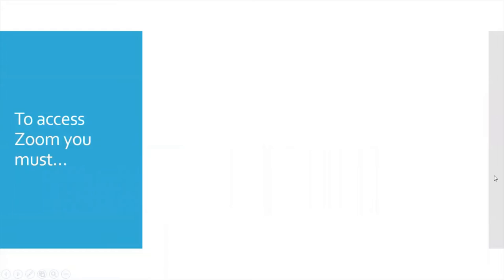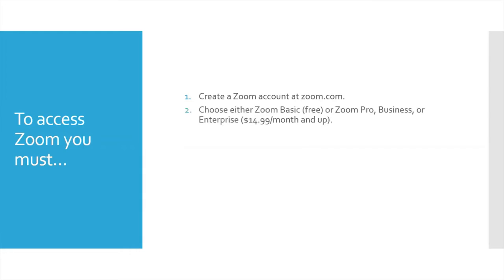To access Zoom, the first thing you have to do is create a Zoom account at zoom.com. It's very simple, very quick, only takes a couple of minutes. At that point, you'll choose either Zoom Basic, which is free, or one of the paid memberships — Zoom Pro, Zoom Business, or Zoom Enterprise — which start at $14.99 a month and go up with each level. The free basic version is very versatile and will have most likely everything you're going to need. Unless you're really part of a business, there's really no need to upgrade to a paid membership.